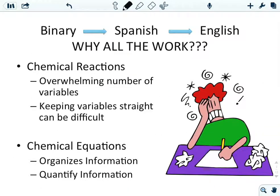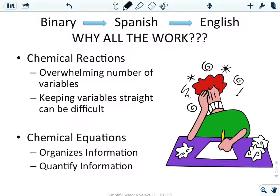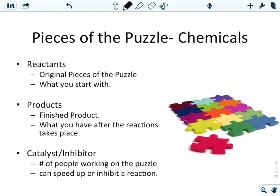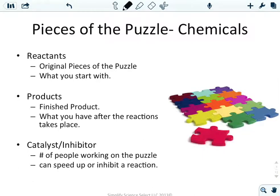From the lab, we went from binary to Spanish to English — why all the work? It's to show us and represent what actually happens when we write a chemical equation. In chemical reactions, there's an overwhelming number of variables. When we describe a reaction in a paragraph it takes a lot of space. Chemical equations help us organize and quantify information, making everything nice and neat so we can see what's going on.